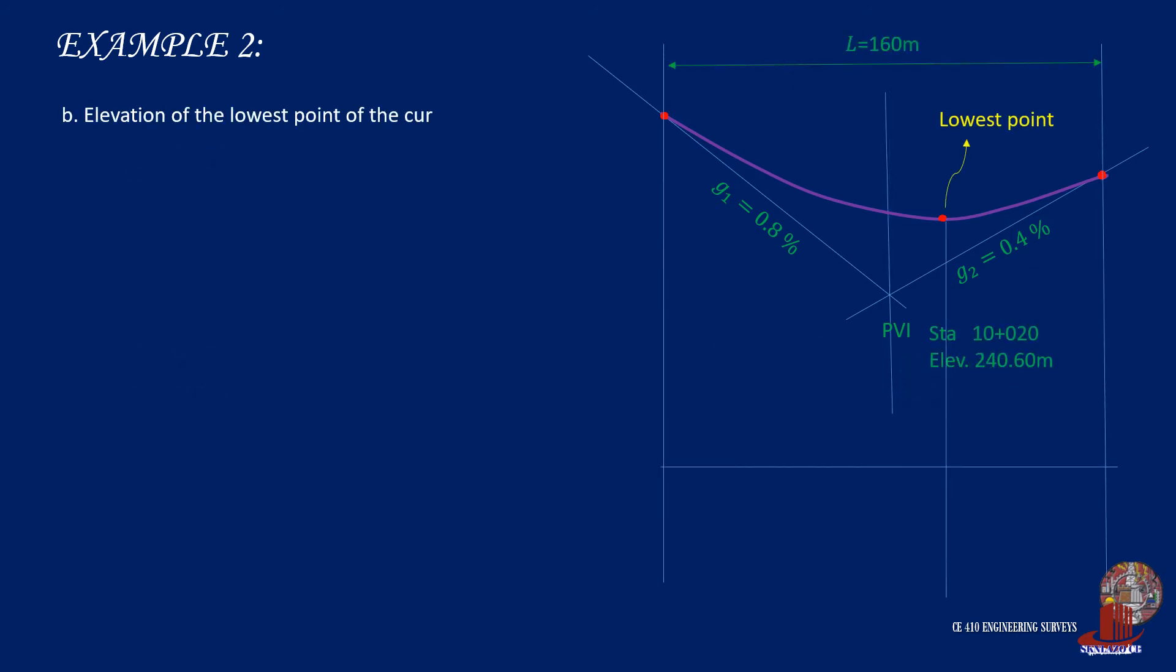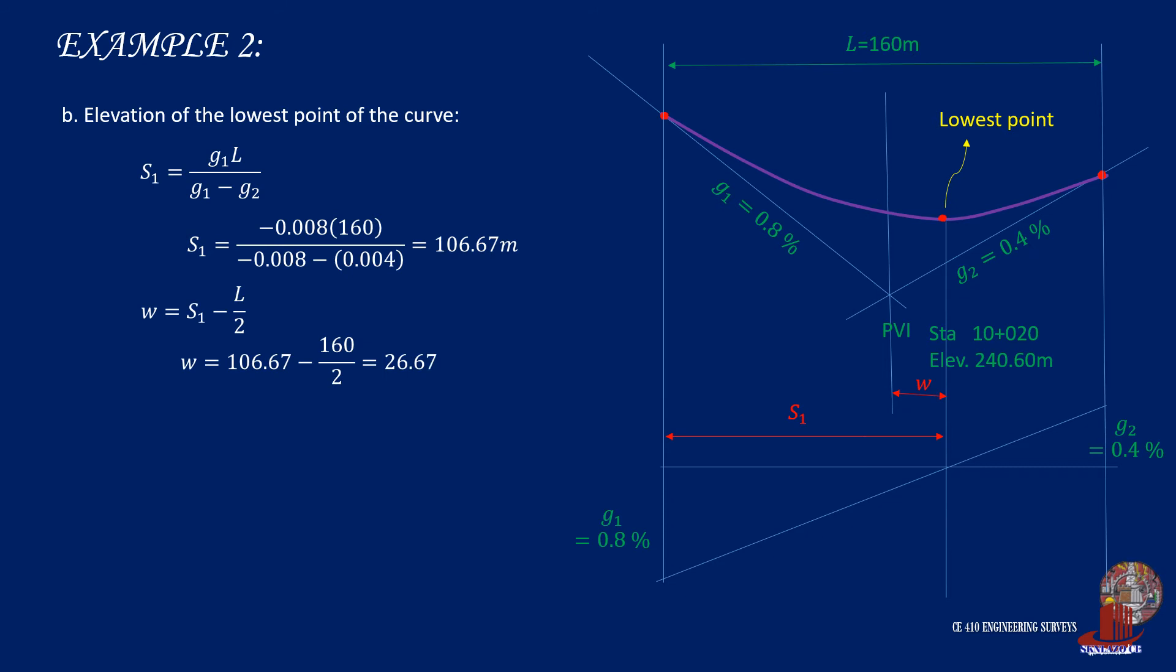The elevation of the lowest point will also be determined using the grade diagram, where the horizontal distance S1 is taken from the ratio and proportion of triangles deriving the formula, and S1 is solved as 106.67 meters. And it is noted that the lowest point is located after the midpoint.